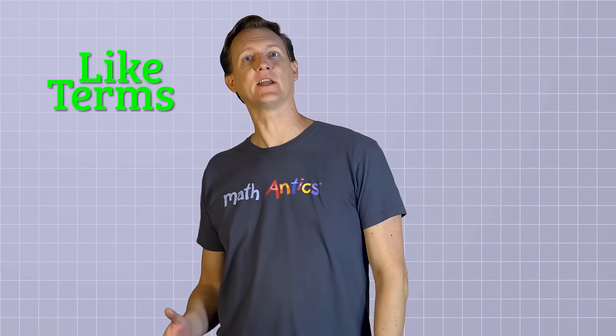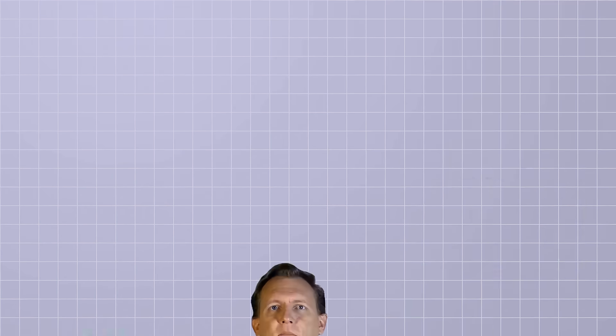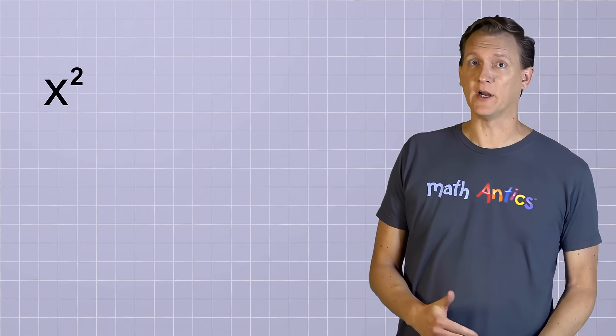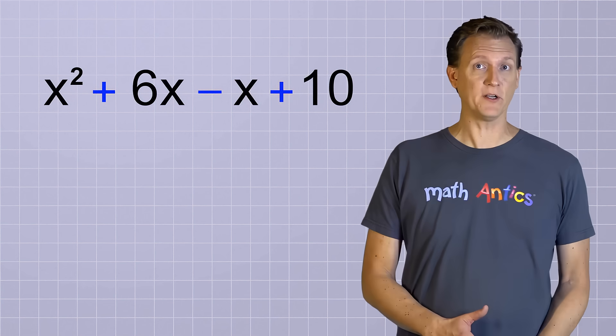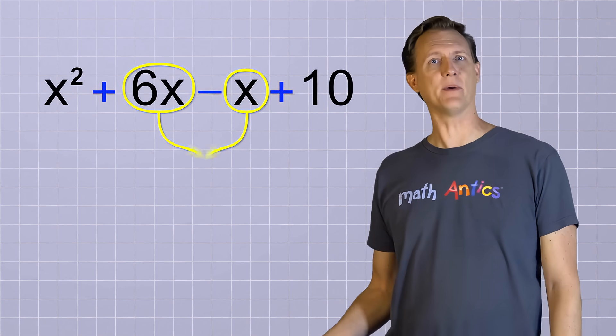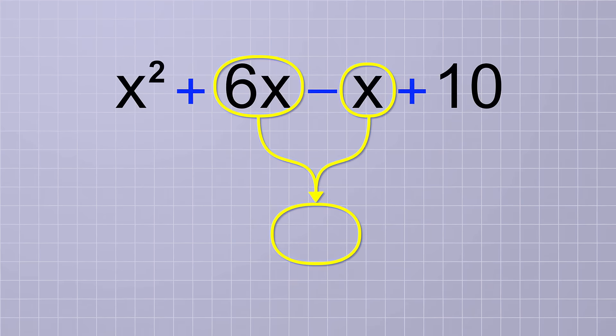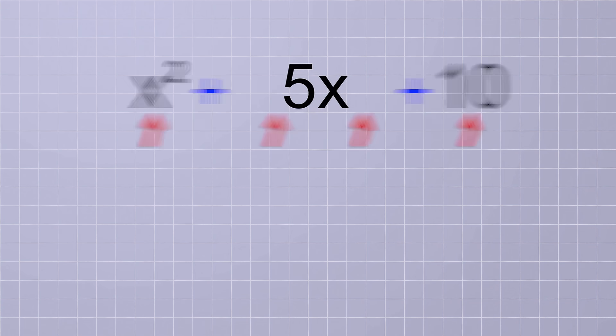Alright, now that you've had some practice identifying like terms, let's look at some complicated polynomials that we can simplify by combining any like terms that we find. Here's our first example. x squared plus 6x minus x plus 10. Do you see any terms that have the same variable part? Yup, these two terms in the middle both have the variable x, so we can combine them. 6x minus x would just give us 5x since 6 minus 1 is 5. Remember, if you don't see a number part in a term, then it's just 1. So this polynomial started with 4 terms but simplified to 3 terms. x squared plus 5x plus 10.